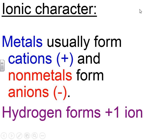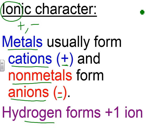The first pattern we'll look at is ionic character. If you remember, an ion is a charged atom — an atom that loses or gains electrons. You can be positively charged or negatively charged. It turns out that metals will usually become positively charged. We call these cations, whereas nonmetals will become negatively charged. We call these anions.